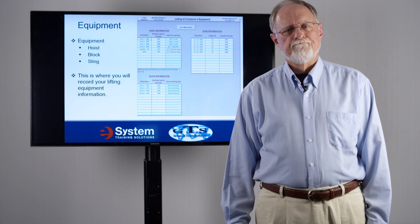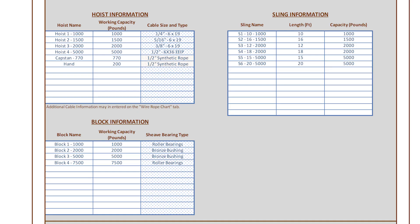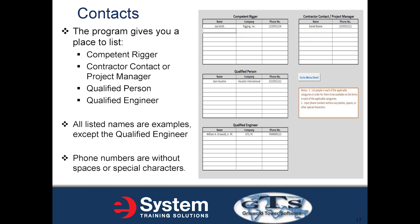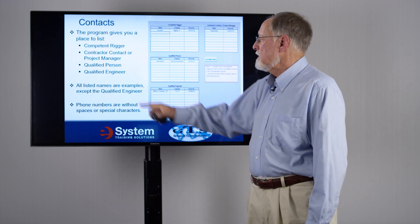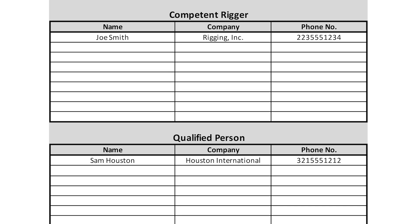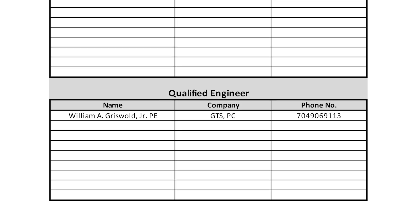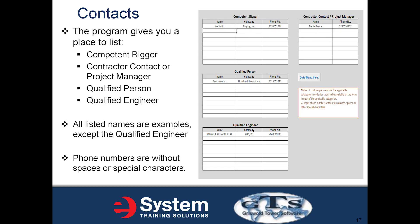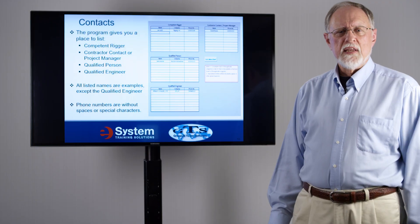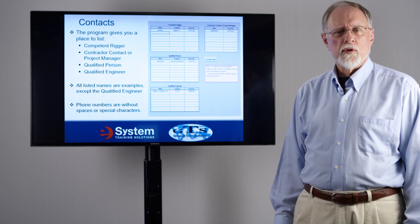The equipment tab covers your hoist, your blocks, and your slings — this is where you record all of your lifting equipment information. The contacts page gives you a place to list your competent rigger, the contractor contact or project manager, a qualified person, and the qualified engineer you work with. All listed names and examples except the qualified engineer are merely examples. Phone numbers should not have any spaces or special characters, because the software will automatically add those on the appropriate forms.